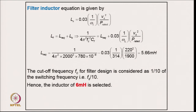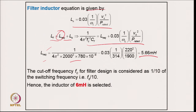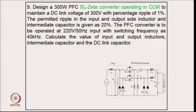Coming to the EMI filter inductor design: the source inductance relation gives total inductance as source inductance plus required inductance. Putting in values gives a required inductance of 5.66 mH as the minimum. Since the supply inductance is uncertain, a slightly higher value is selected. Therefore, approximately 6 mH is selected for the filter inductor, completing the Zeta converter PFC design.